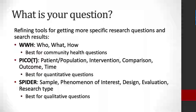The last strategy to consider is called SPIDER, a play on the PICO framework but situated particularly well for qualitative questions, where the S stands for sample, the P for phenomenon of interest, D for design, E for evaluation, and R for research type. You can definitely find more information about PICO and SPIDER online. For this next portion we'll be looking at the first search strategy of who, what, how.